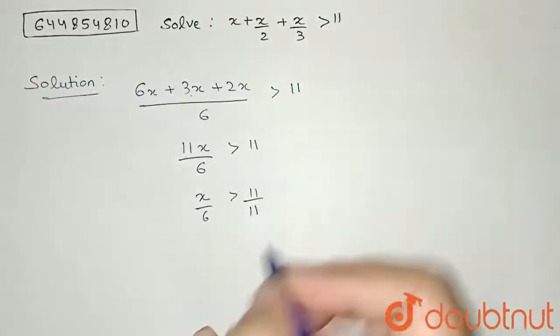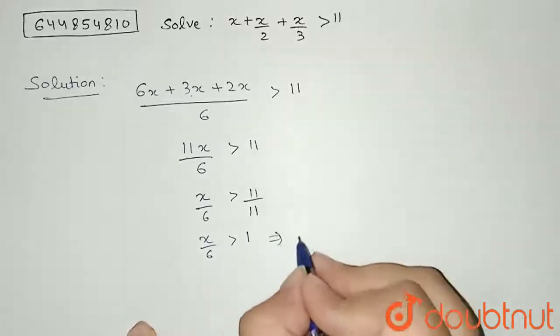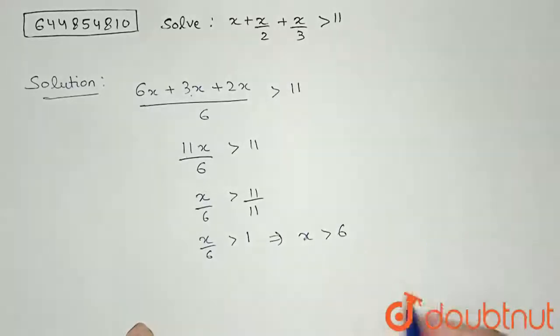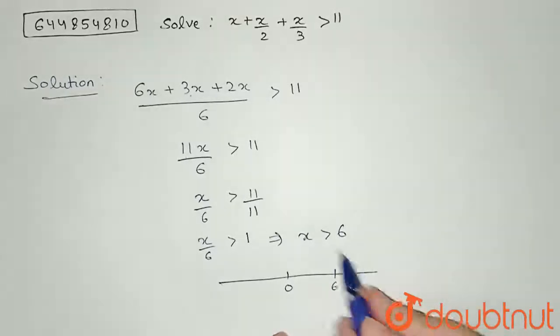than 11 by 11. So I'll get my x by 6 greater than 1, and this will imply that x is greater than 6. If we see on the number line, 0 lies here, 6 will lie here, and it